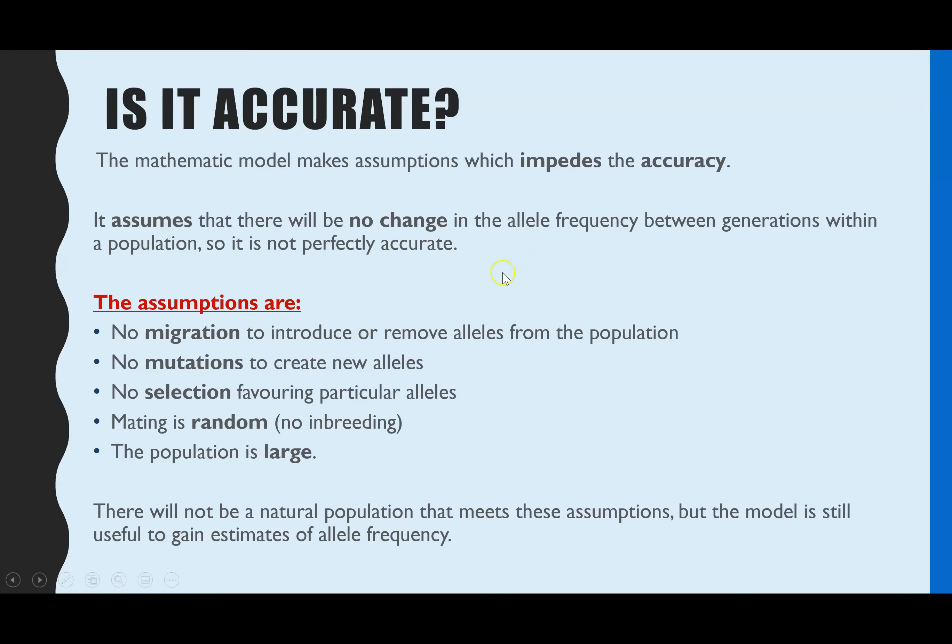The next thing is whether this model is accurate. That's a really common one or two mark question linked to the maths side of this model. It's all to do with the fact that this mathematical model has many assumptions which impede its accuracy. It assumes that there will be no change in the allele frequency from one generation to the next, which isn't going to be the case, which is why it's not perfectly accurate.